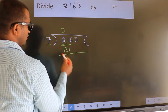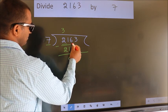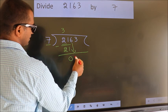Now, we should subtract. We get 0. After this, bring down the beside number. So, 6 down.